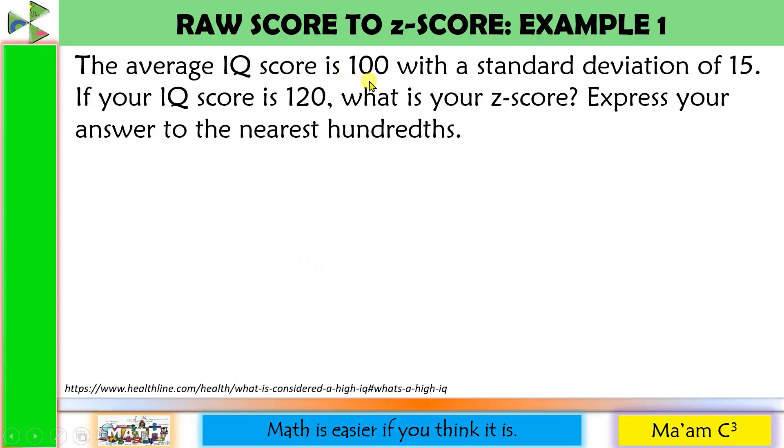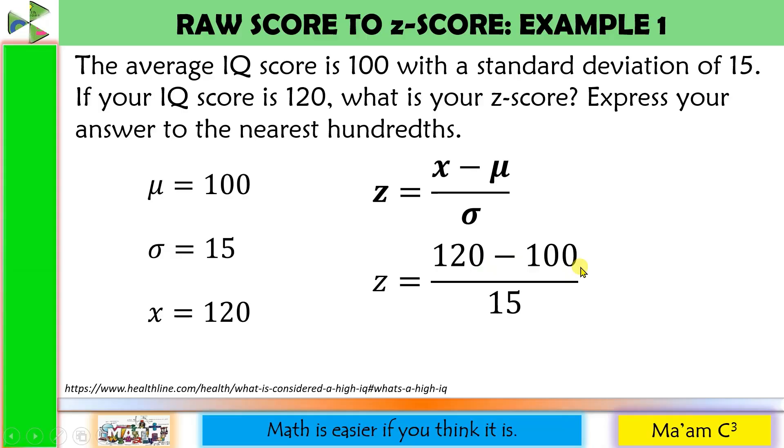We have the average IQ, which is 100, meaning that is the mu. Mu is equal to 100, the mean. And then we have here the standard deviation of 15, so sigma is equal to 15. And then your IQ score is 120. This is your score. So this is the raw score. This is X. X equals 120. Let us recall the formula. Let us now substitute our values here. X is 120, mu is 100, and sigma is 15. 120 minus 100 is 20, divided by 15 is 1.33. So this is the corresponding Z-score of 120.